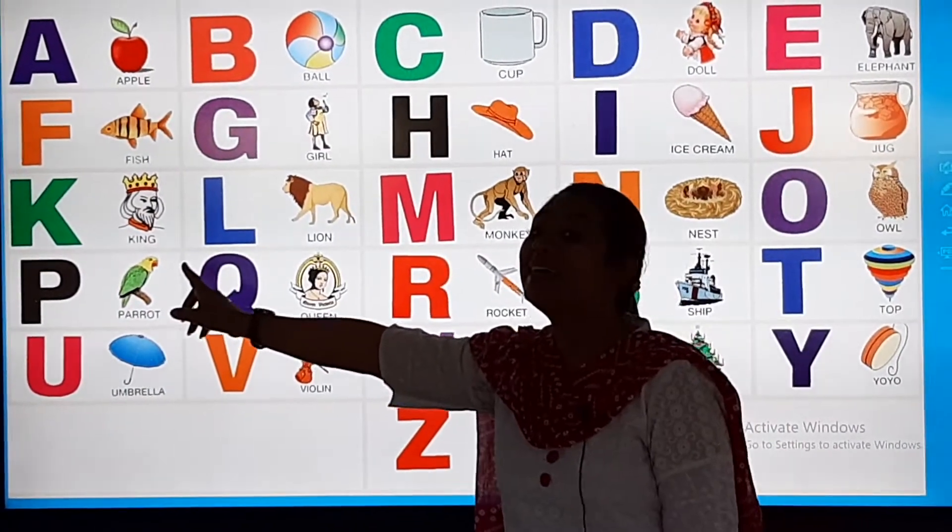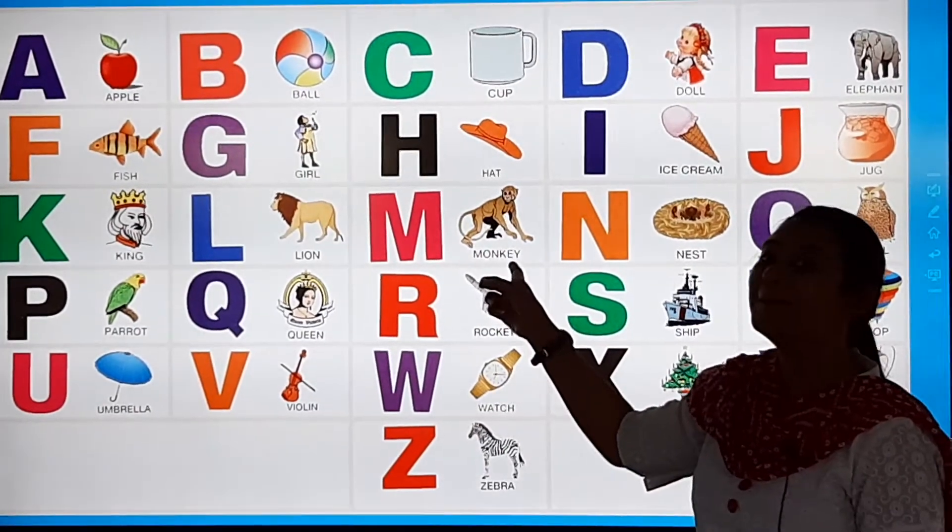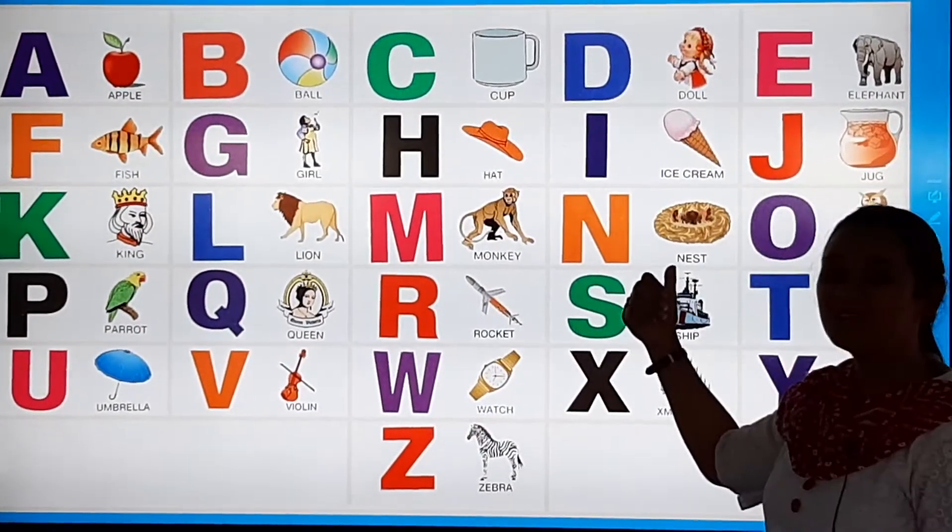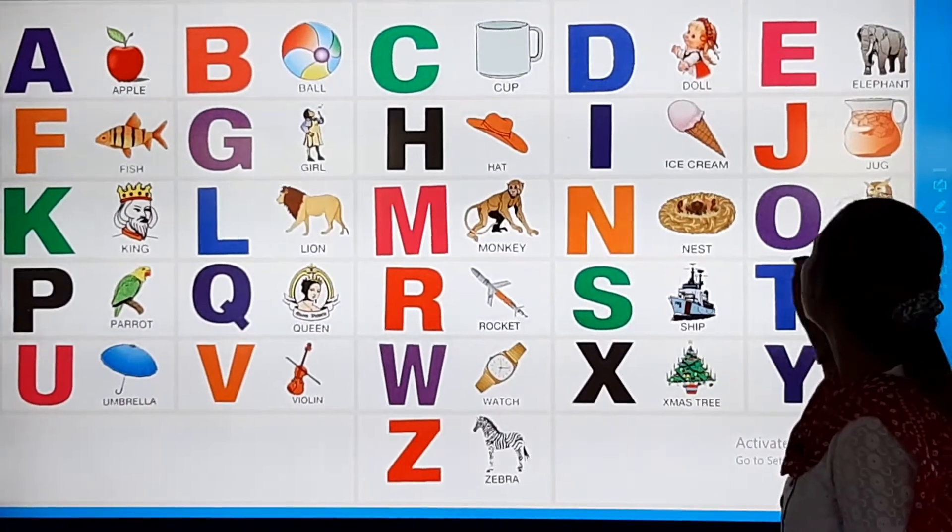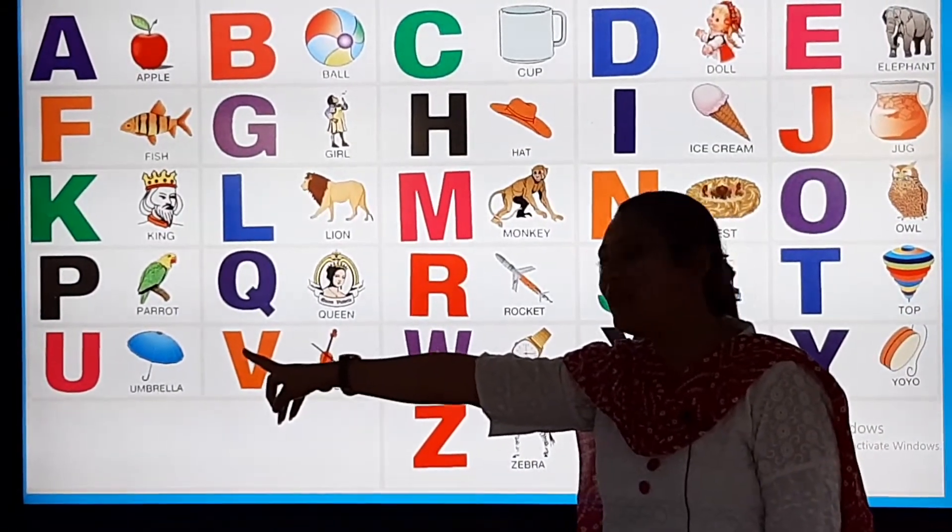K for King, L for Lion, M for Monkey, N is for Nest, O for Owl, P for Parrot.